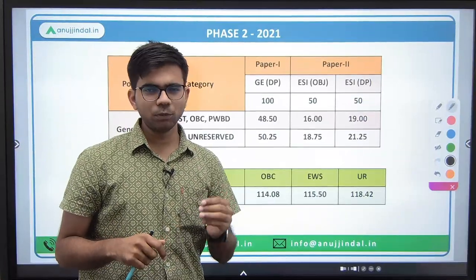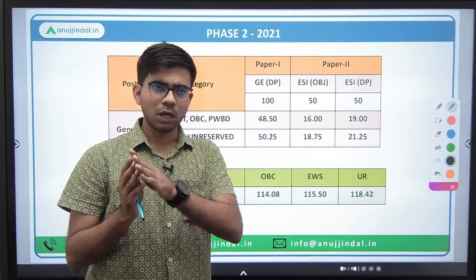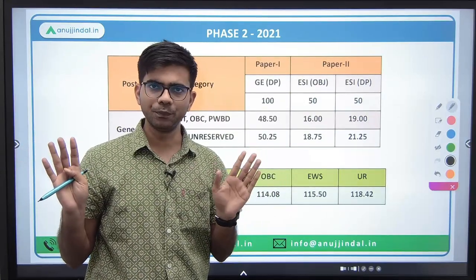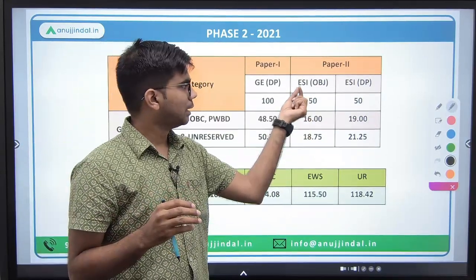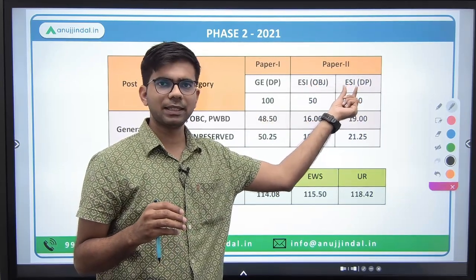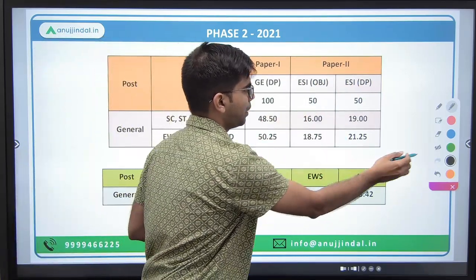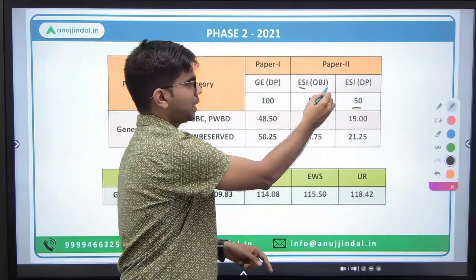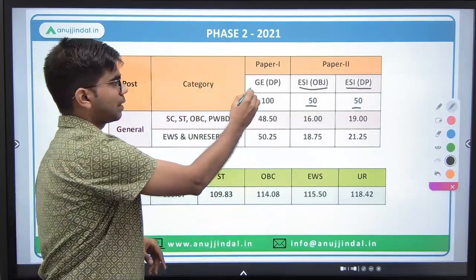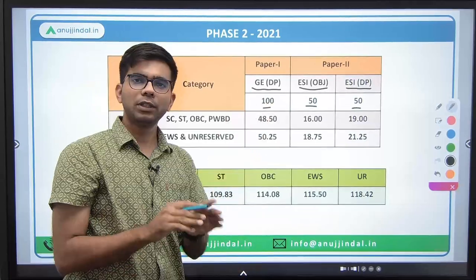Now for Phase 2, there was a change before 2021 — the ESI and ARD portion was entirely objective with 65 MCQ questions. But now it has been split: 30 objective questions and a descriptive section of 6 questions (attempt 4). So it's 50 marks objective and 50 marks descriptive. The Phase 2 pattern includes: ESI objective paper, ESI descriptive paper (which includes ARD), and a general English paper which is a 100-mark descriptive paper.